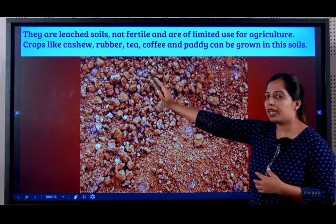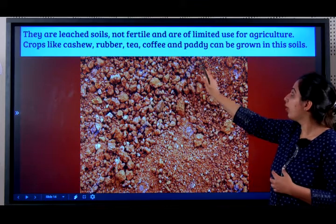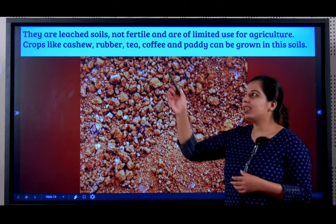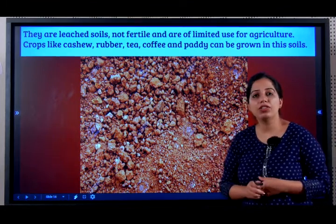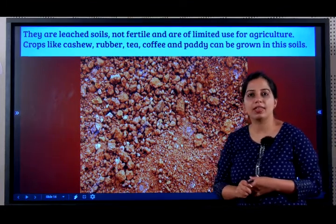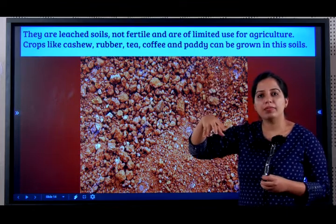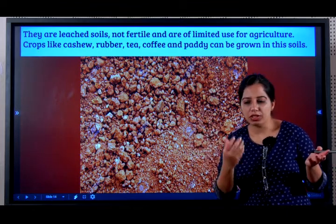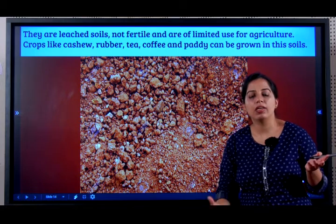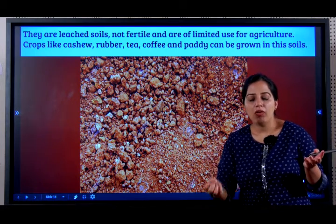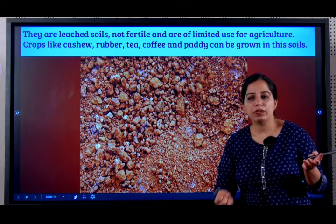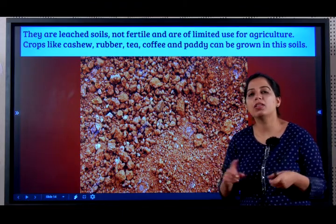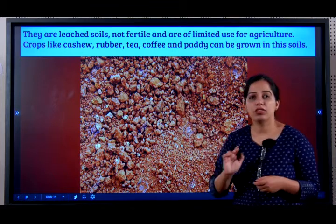Crops like cashew, rubber, coffee, and paddy can be grown on laterite soil. Leached soils are soils where rain causes water to go underground, taking all the minerals and nutrition of the soil along with it. Such soils are called leached soils.